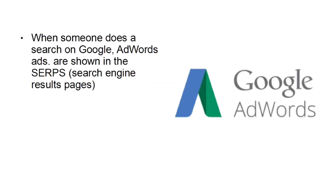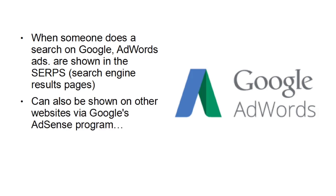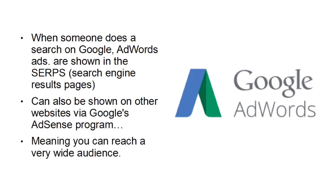Let's take a look at some of the key differences between advertising on Google AdWords and advertising on Facebook ads. When someone does a search on Google, AdWords ads are shown in the SERPs — that's the search engine results pages. They're generally shown down the right-hand column and sometimes across the top of the results, and they usually say 'ads' or 'sponsored results'. You can also show an ad on somebody else's website via Google's AdSense program, meaning you can reach a very wide audience with Google AdWords.